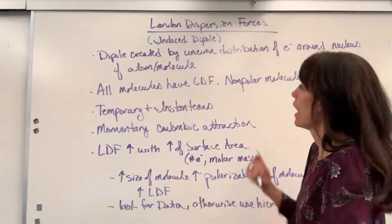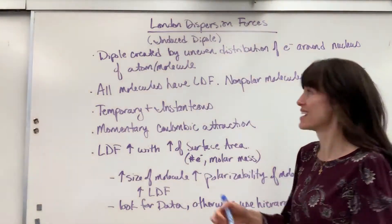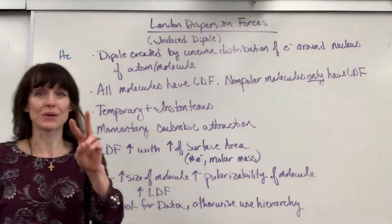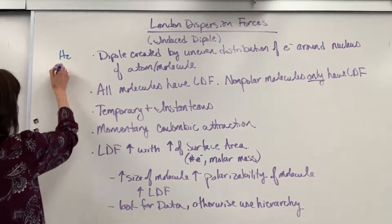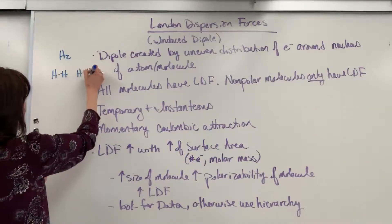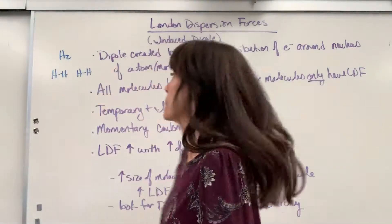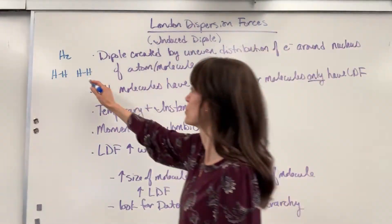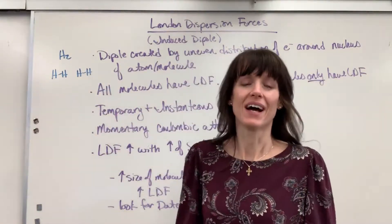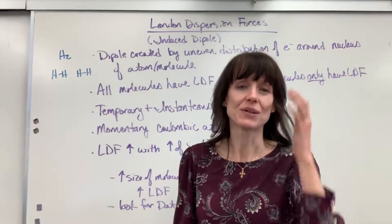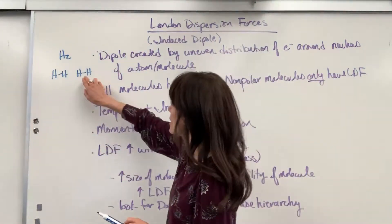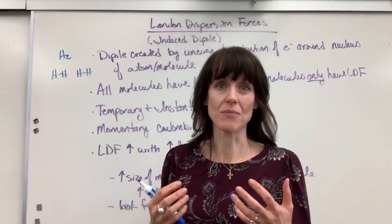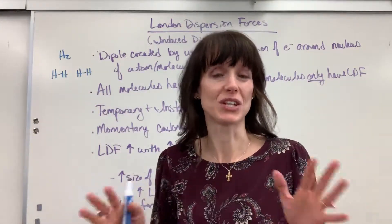Let me give you an example. I'm going to use hydrogen gas, H2, and let's say we have two molecules that are going to come next to each other. Let's do our Lewis structure. Hydrogen is very, very nonpolar. The hydrogens each have identical electronegativity, so they're going to share perfectly. The two electrons between these two hydrogens will spend an equal amount of time on each side of the atom. They share perfectly.